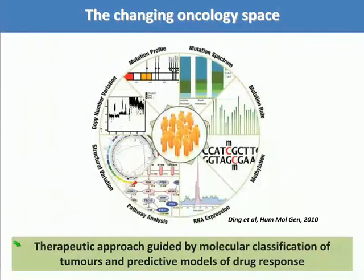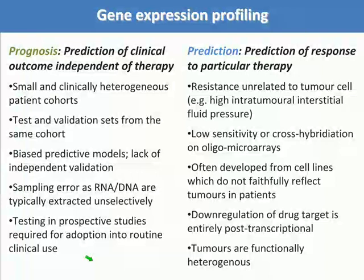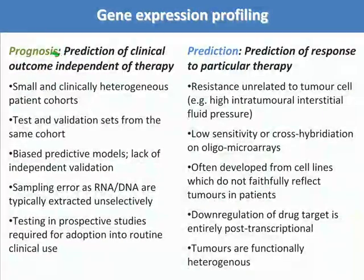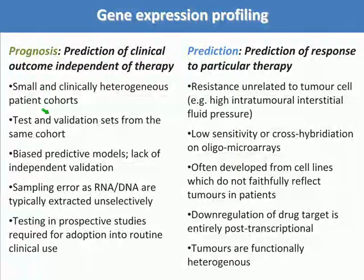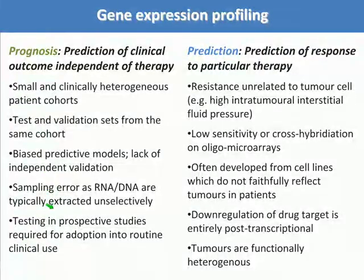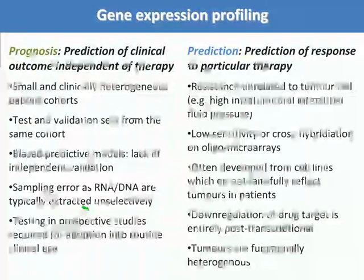These technological advances are gradually leading to a therapeutic approach guided by molecular classification of tumors and predictive models of drug response. However, if we focus on gene expression profiling technologies, this approach doesn't come without challenges. Many published studies are derived from small and clinically heterogeneous patient cohorts; often the test and validation sets are from the same cohort, and there is a danger for biased predictive models and a frequent lack of independent validation. We have to overcome potential sampling error, as RNA and DNA are typically extracted unselectively, and gene signatures need to be tested in prospective studies to be adopted into routine clinical use.